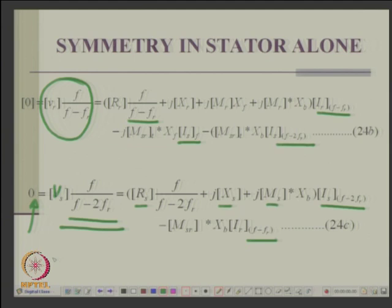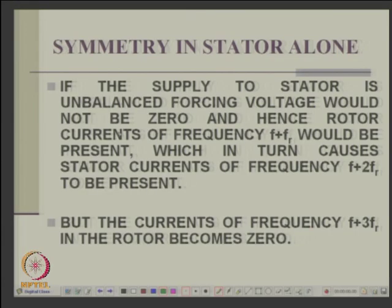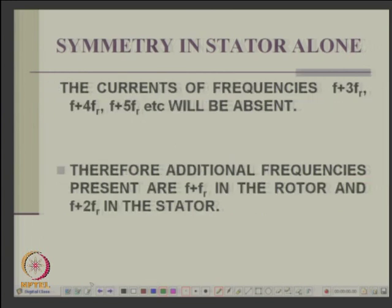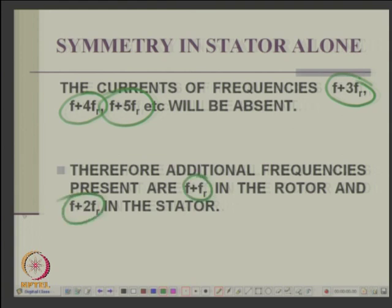If the supply becomes unbalanced, there will be additional frequencies f plus f_r and f plus 2f_r, but there will be no f plus 3f_r — it terminates at f plus 2f_r. So additional frequencies f plus f_r in the rotor and f plus 2f_r in the stator appear. If both stator and rotor are symmetrical, M_sr becomes a simple matrix, and there will be no f minus 2f_r, f minus 3f_r, f plus 2f_r, or f plus 3f_r. Only f in stator and f minus f_r in rotor — requiring only 2 equations.